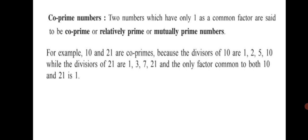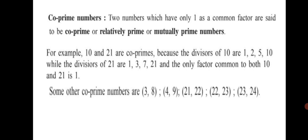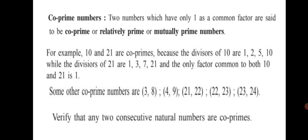Some other pairs of co-prime numbers are 3 and 8, 4 and 9, 21 and 22, 22 and 23, 23 and 24. This also tells us that any two consecutive natural numbers are co-prime numbers. Co-primes means any two numbers whose only common factor is 1 — no other factor is common to them.